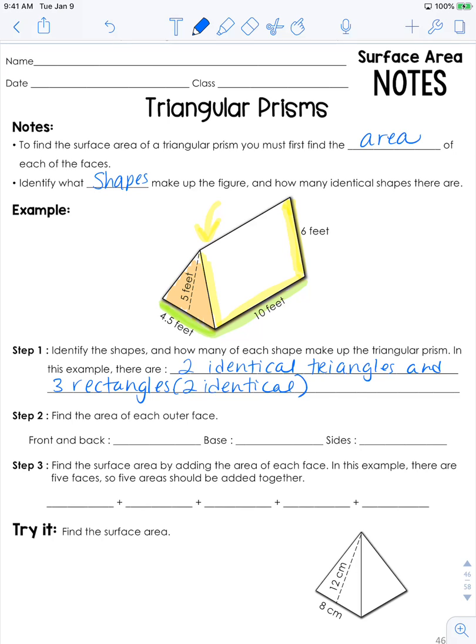We're going to have to find three different areas here. So the area of each outer face, the front and back, that would be the orange, those are triangles. So it's going to have to be 1/2 times the base, which is 4.5, times the height, which is 5. And we'll get the answer to that in just a minute. Actually, I'll just write it underneath here, 11.25.